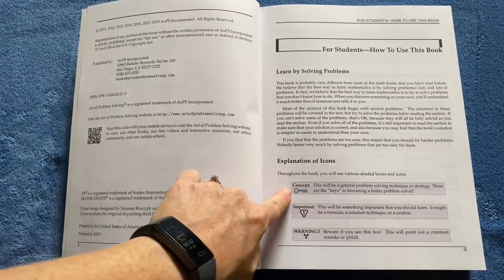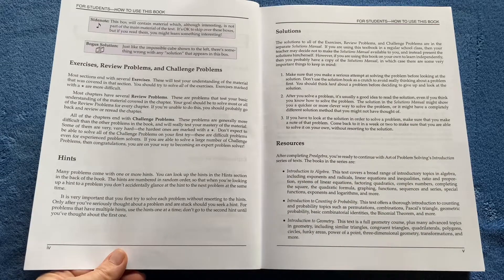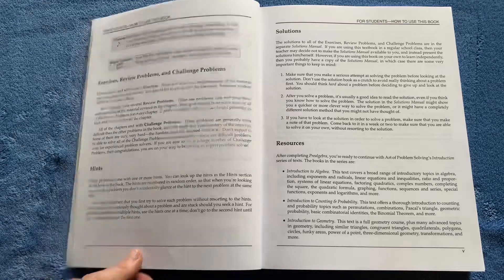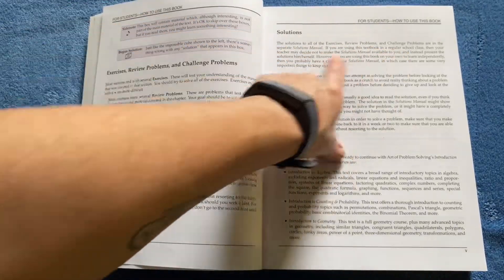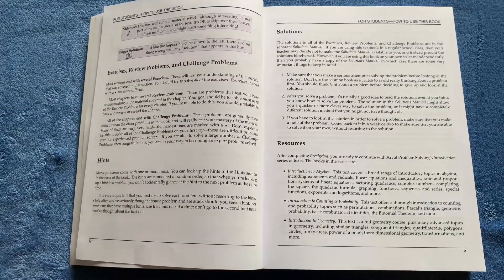It's got some icons: concepts, importance and warnings, resources, hints, solutions, all that kind of stuff. So the solutions to all of the exercises, review problems, and challenge problems are in the separate solutions manual. Let's look at that, shall we?